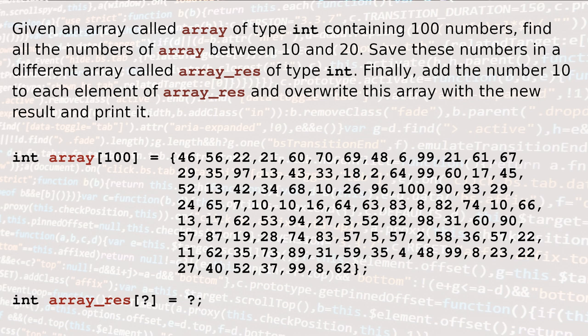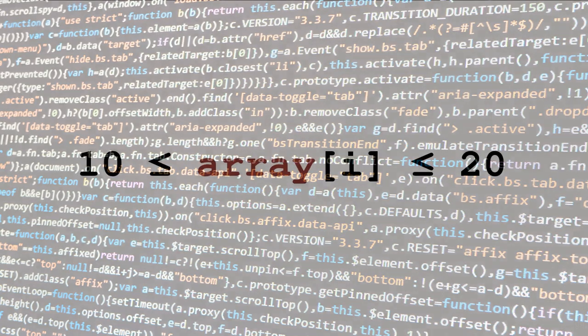The first thing to do is to understand how to filter the numbers we are interested in knowing that they must be between 10 and 20. The condition that satisfies this filter is this one.